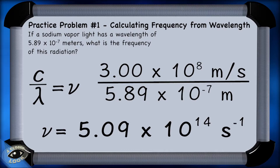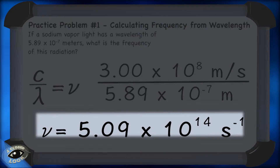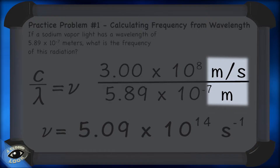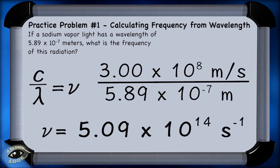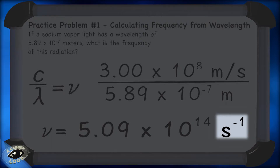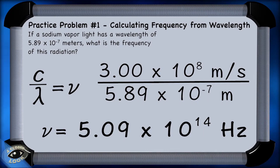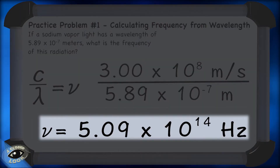When we divide 3.00 times 10 to the eighth meters per second by 5.89 times 10 to the negative seventh meters, we get 5.09 times 10 to the fourteenth. Notice that meters in the numerator cancel out meters in the denominator, leaving us with per second — written as s to the negative one, or more commonly, hertz. The frequency of the light emitted from a sodium vapor light is 5.09 times 10 to the fourteenth hertz.